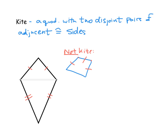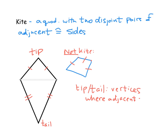There's also vocabulary for the different vertices of a kite. The vertices where the adjacent congruent sides meet are called the tip and the tail, and the tip and tail will always be opposite each other. As for the other two vertices, a student once suggested calling them wings — like an actual kite has wings — so we'll call those vertices the wings of the kite. The wings of a kite are the two vertices that are not the tip or the tail.